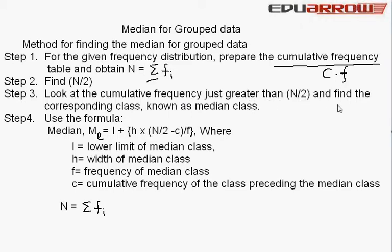Step 4: Use the formula: Median M_e = l + h × (N/2 - c)/f, where l equals the lower limit of the median class.